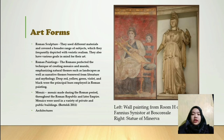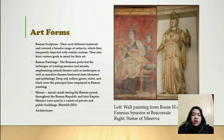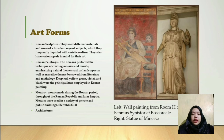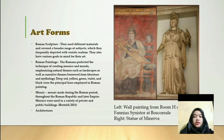The second art form is Roman painting. The Romans perfected the technique of creating mosaics and murals, emphasizing natural themes such as landscapes as well as narrative themes borrowed from literature and mythology. Deep red, yellow, green, violet, and black were the principal colors employed in Roman paintings. An example is at the left side of the picture — a wall painting from the room of the Villa of Peace.